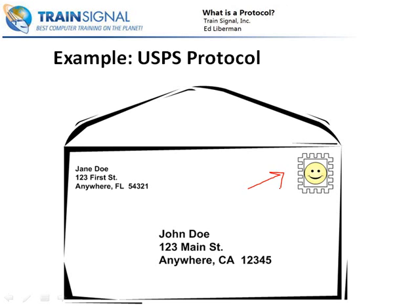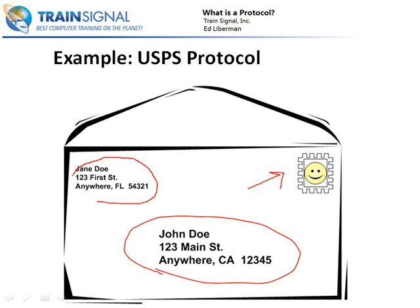Now, before we go any further, I want to point out one little side note. Each one of these items — putting the letter in the envelope, the location and formatting of each of our addresses, the location of the stamp — each of these individually kind of has their own set of rules. So really, it's not the United States Postal Service protocol, but it's the USPS protocol stack, because it's a stack of little mini protocols all working together to make up the United States Postal Service protocol. We'll come back and revisit that concept of a stack of protocols a little bit later on.